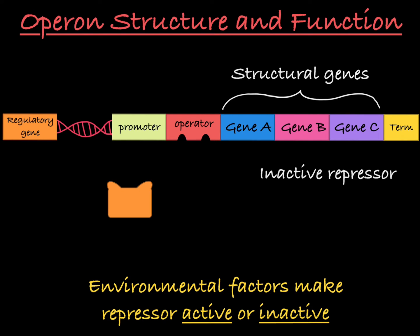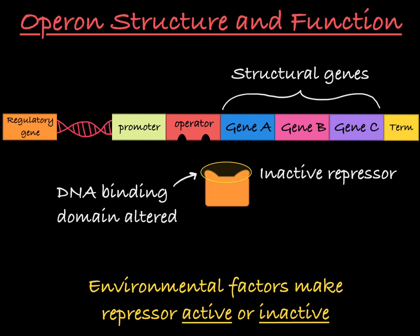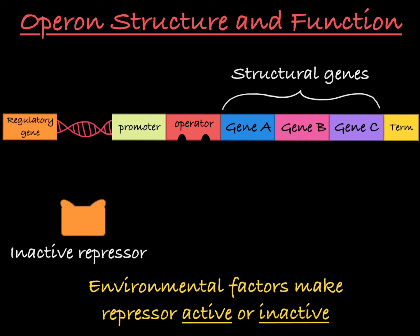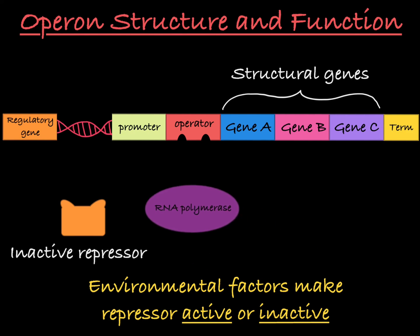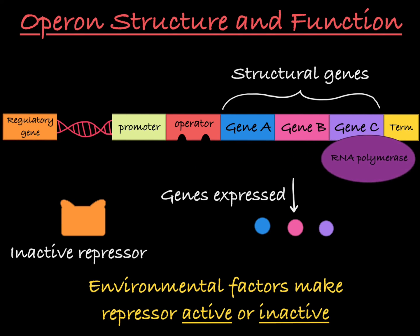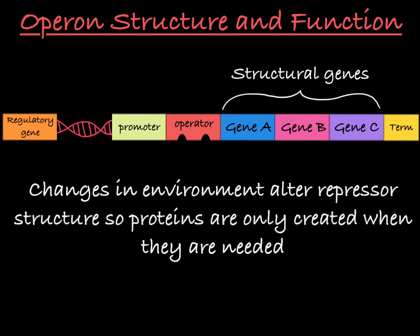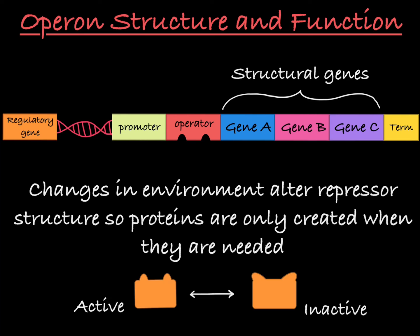When the repressor is inactive, the structure of its DNA binding domain is altered so that it cannot attach to the operator DNA. Because the inactive repressor can't bind to the operator, RNA polymerase can effectively attach to the promoter and transcribe the genes. In this circumstance, the operon is expressed. So changes in the external environment or changes inside the cell can make a repressor change shape, allowing the cell to adjust to changes by making only the proteins necessary in the moment.